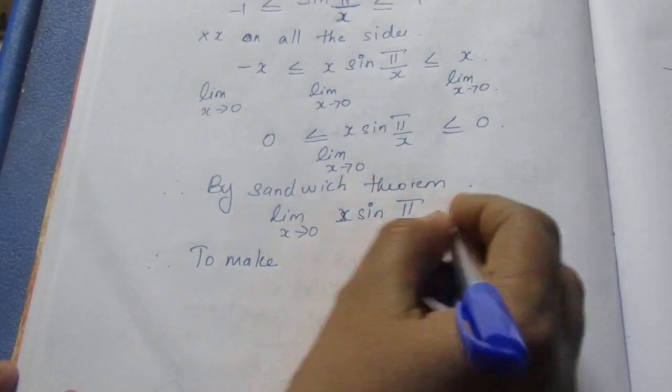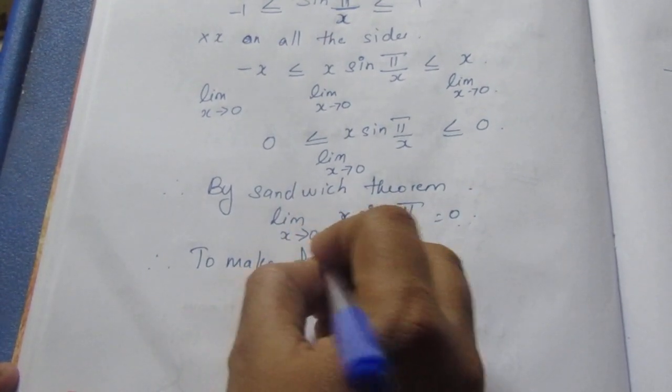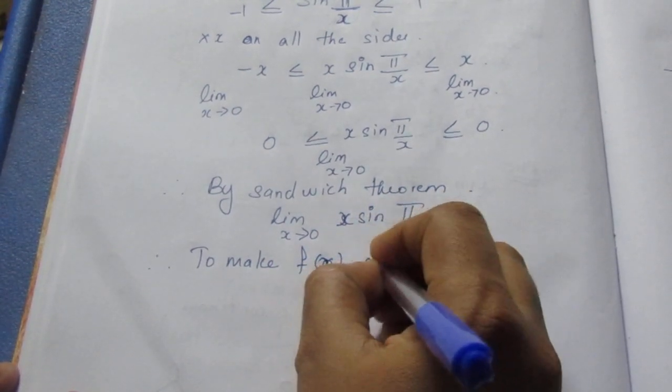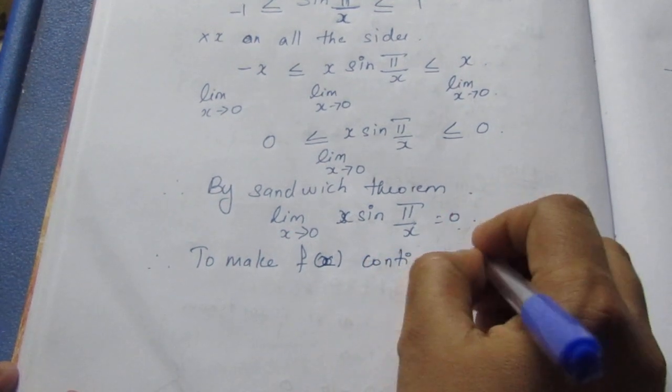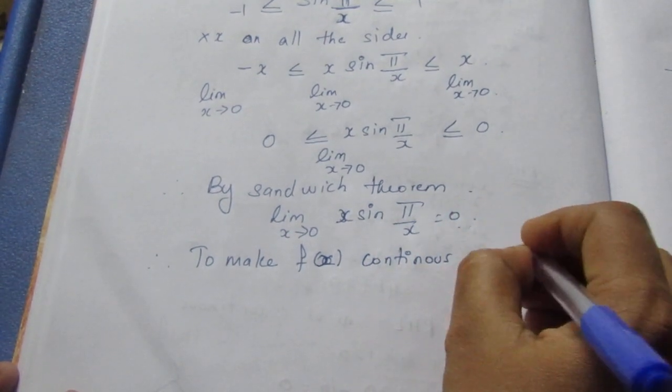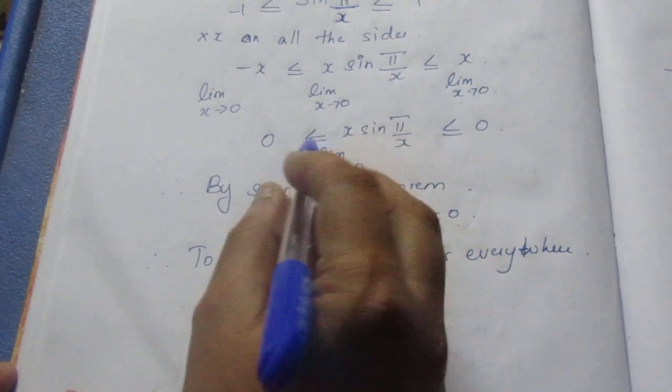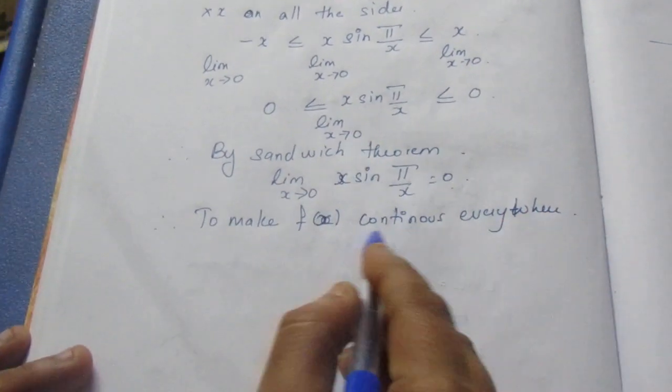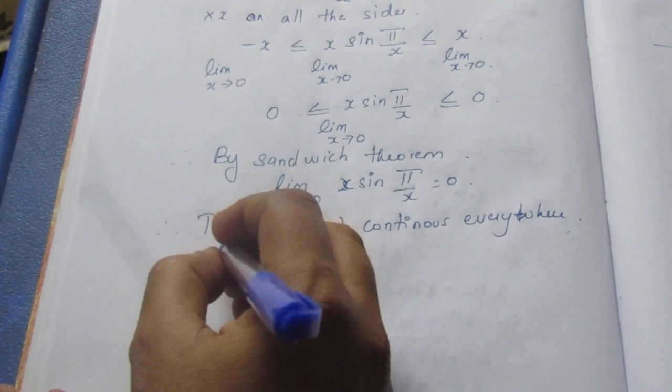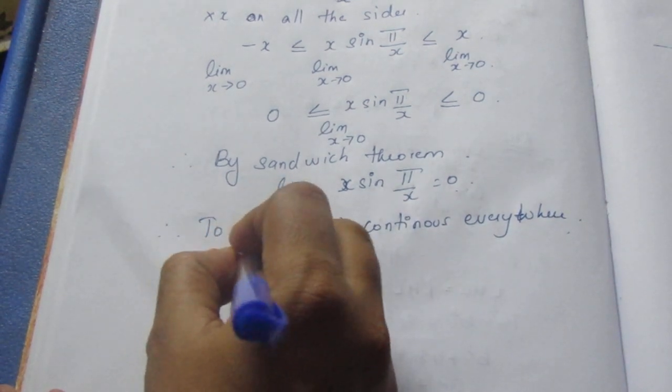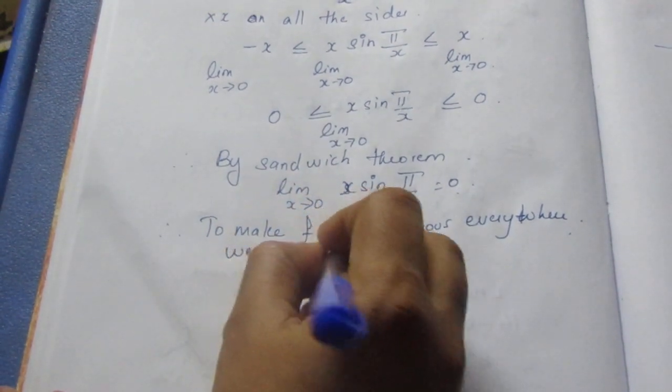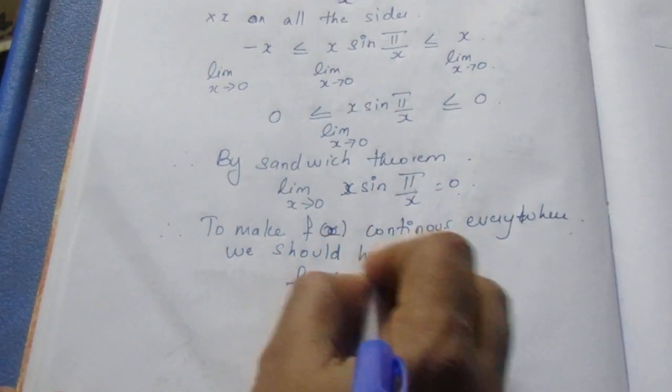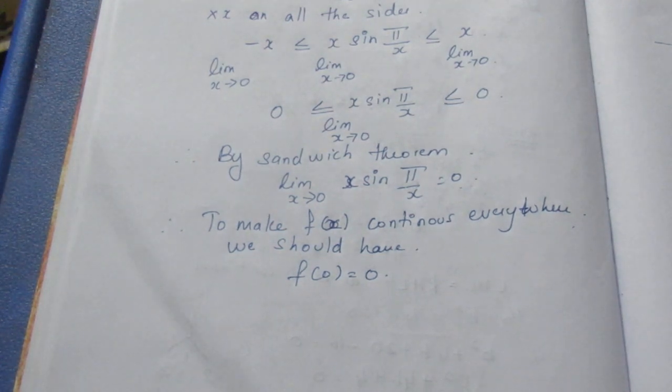To make f(x) continuous everywhere, we should have f(0) = 0.